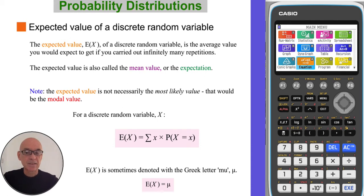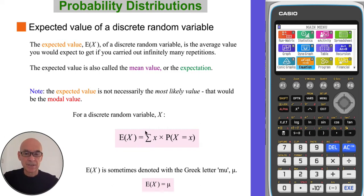The expected value is not necessarily the most likely value — that would be the modal value. To calculate the expected value, we sum up the products of each x value multiplied by its respective probability.